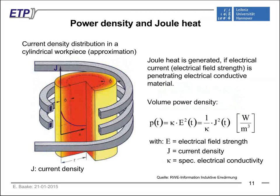The electromagnetic penetration depth is where the current density has dropped to 37% of the maximum current density at the surface, coming from the analytical solution of the Maxwell equations. With higher frequencies, we get a smaller penetration depth; with lower frequencies, a higher penetration depth. If the electric current density is distributed in this way in the cylindrical workpiece, the Joule heat — which is generated by the electrical current — also has a strong dependence inside the workpiece. The maximum Joule heat is generated mainly in the surface area of the workpiece, described by the power density formula.